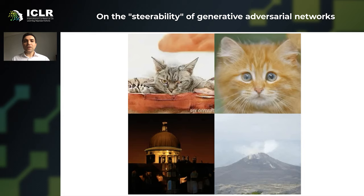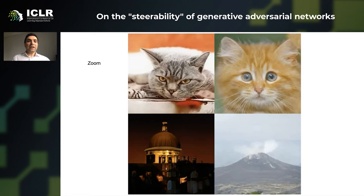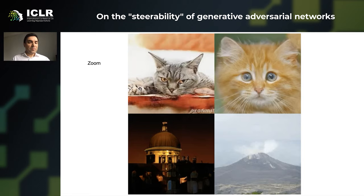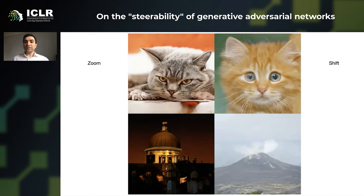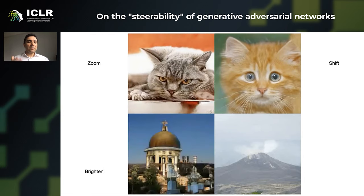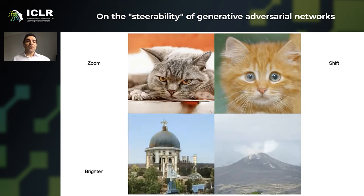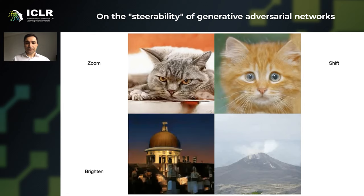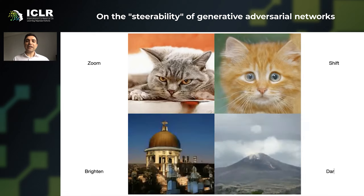Here are some results of our transformations, like camera transformations and color transformations. We show that GANs can zoom in and out of this image, shift it left and right, change the lighting to reveal daylight and night, and even explode this volcano.